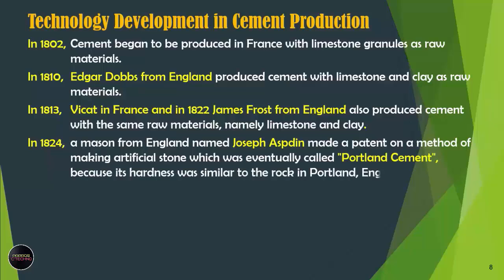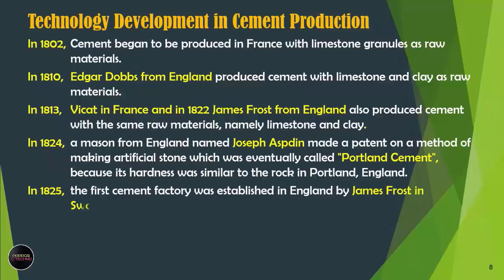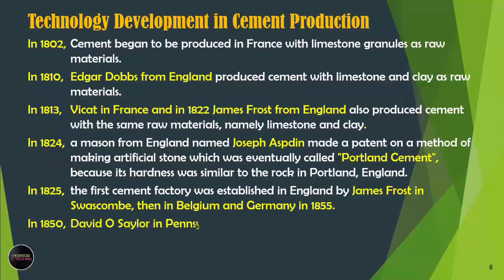In 1824, a mason from England named Joseph Aspdin made a patent on a method of making artificial stone, which was eventually called Portland Cement, because its hardness was similar to the rock in Portland, England. In 1825, the first cement factory was established in England by James Frost in Swanscombe, then in Belgium and Germany in 1855.